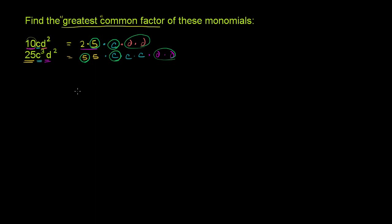So the greatest common factor in this context, the greatest common factor of these two monomials, is going to be the factors that they have in common. So it's going to be equal to this 5 times - we only have 1 c in common - times, and we have 2 d's in common, times d times d. So this is equal to 5cd².